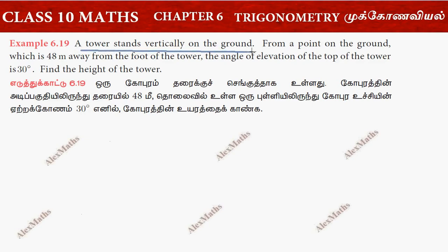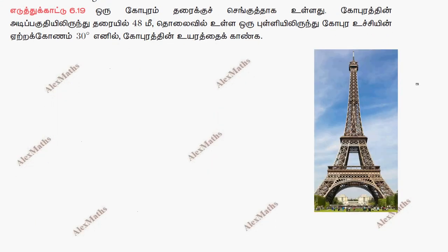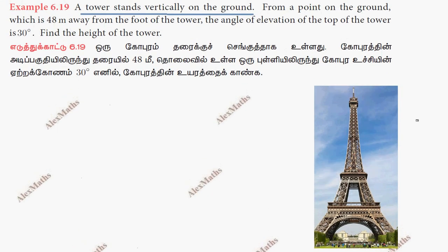A tower stands vertically on the ground. So we have a diagram of a tower. From a point on the ground which is 48 meters away from the foot of the tower, so we have a point on the ground. We have a horizontal line in the tower.